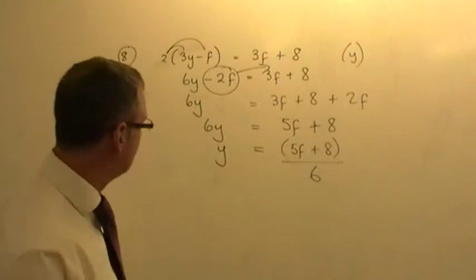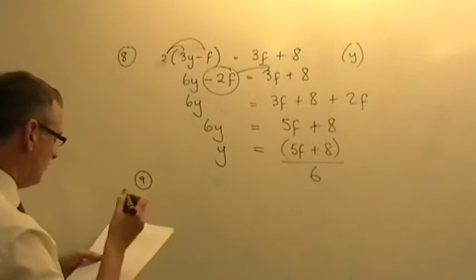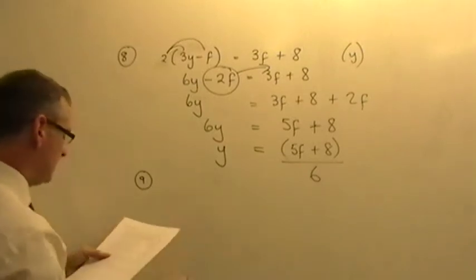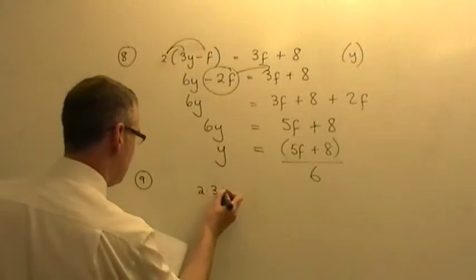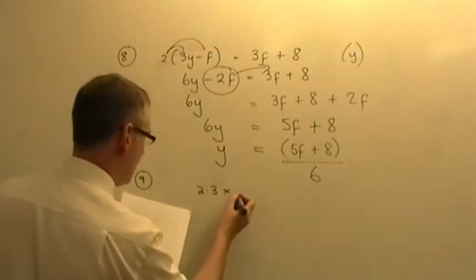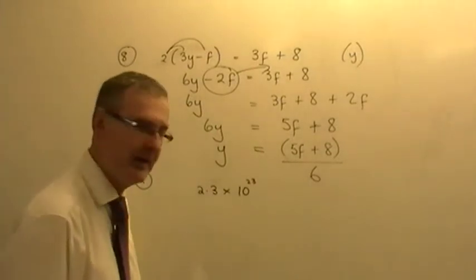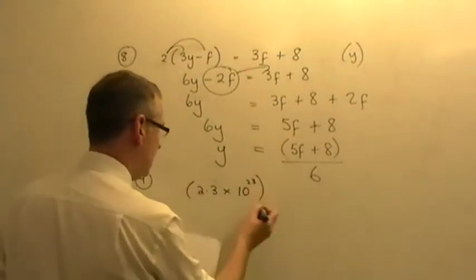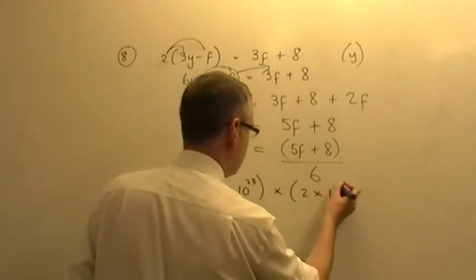Looking at the last question on the sheet of this test, question number 9, we've got a standard form question. It says, find in standard form the value of 2.3 times 10 to the 23. The writing is extremely small there. 23 is the power. Put that in a bracket. And then we multiply by 2 times 10 to the power 32.